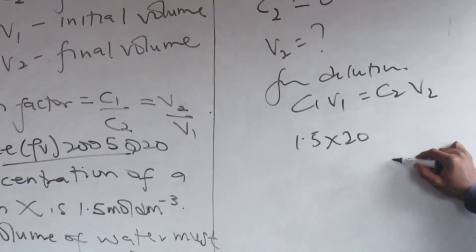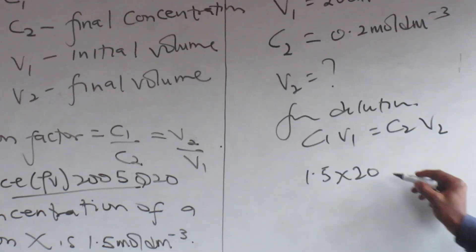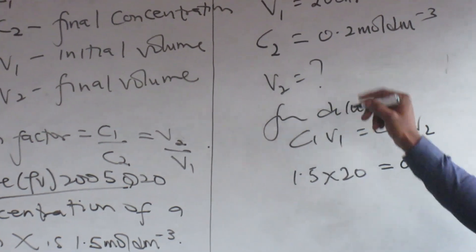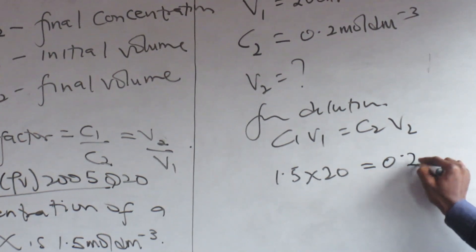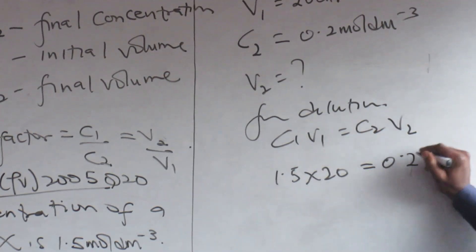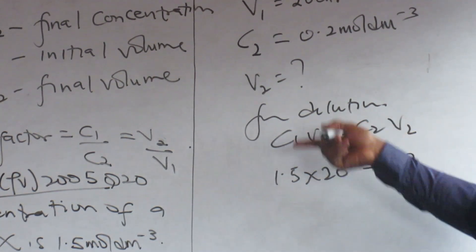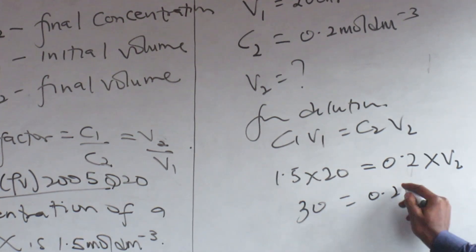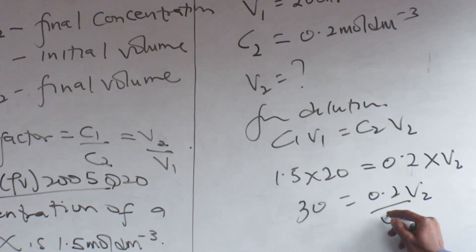Now look at this question. Not all dilution questions will follow this pattern. The concentration of a solution X is 1.5 - that should be my initial concentration, C1. 1.5 mol per dm³, it's the same as 1.5M.